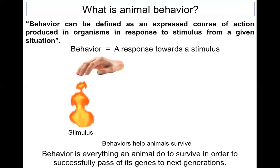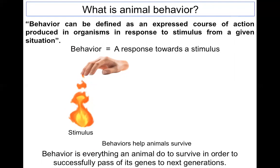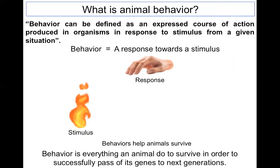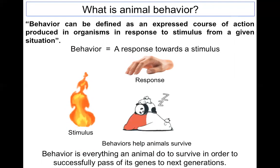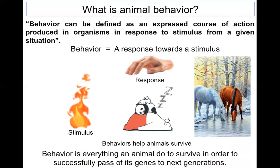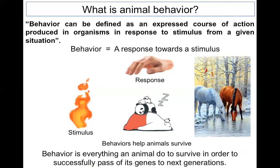For example, when our hand touches fire, we immediately withdraw our hand. The withdrawal is our response, while the fire acts as the stimulus. Similarly, parental care and feeding habits are behaviors that help animals survive. We can say that behavior is everything an animal does to survive and successfully pass its genes to the next generation.